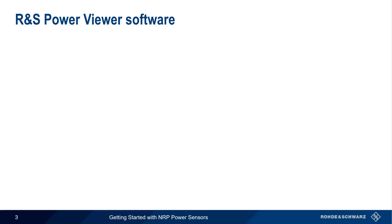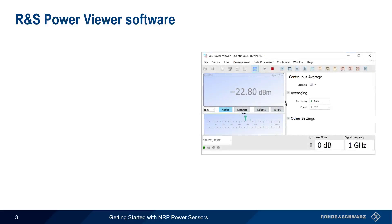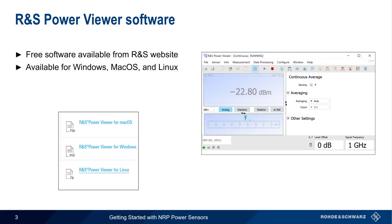Although there are several different ways of connecting to and using NRP Power Sensors, this presentation will focus on using the Rohde & Schwarz Power Viewer software to control and monitor a USB-connected sensor. Power Viewer is free and can be downloaded directly from the Rohde & Schwarz website, with versions available for Windows, macOS, and Linux.